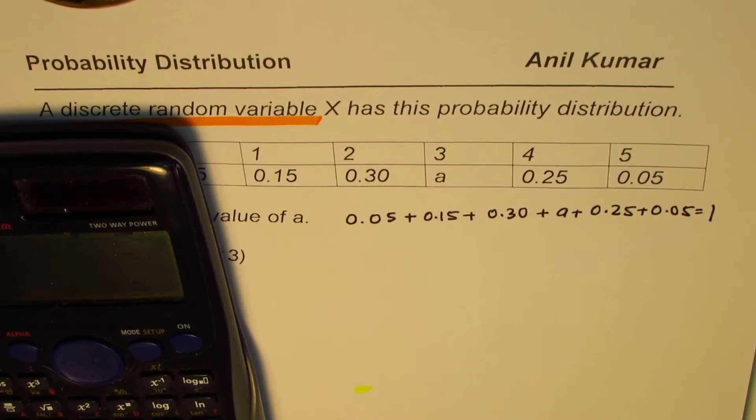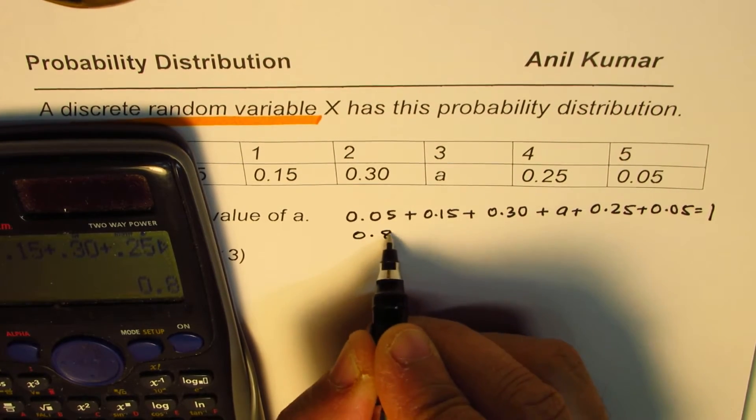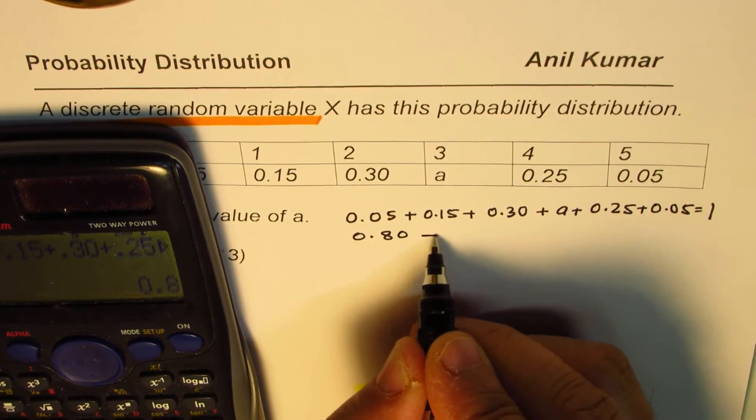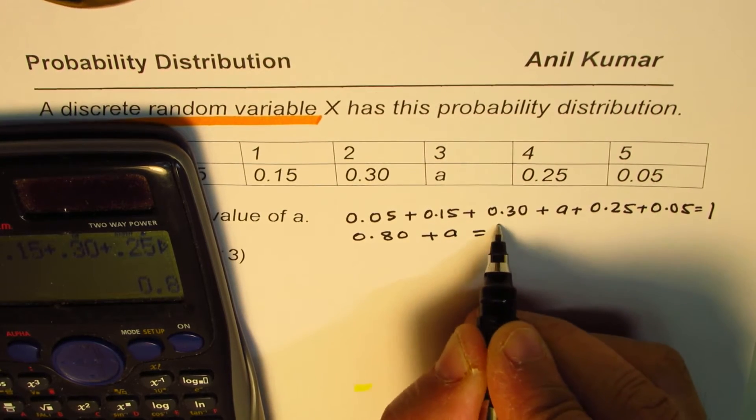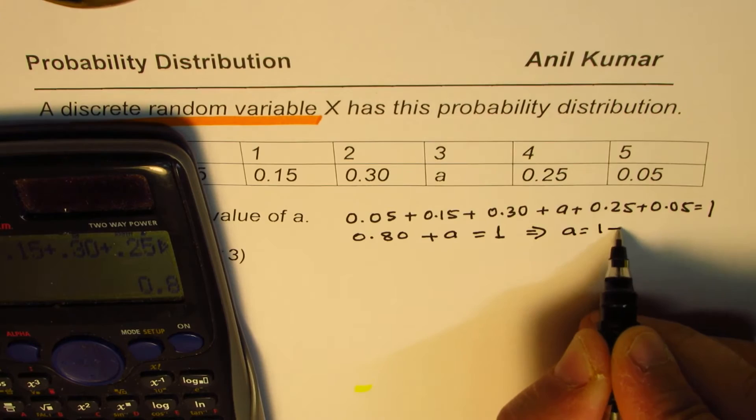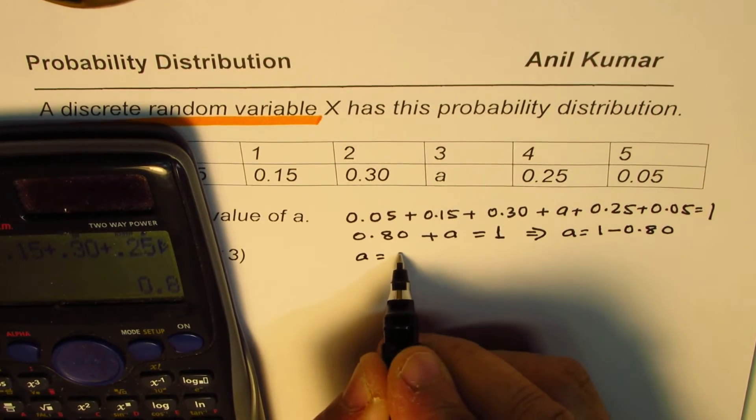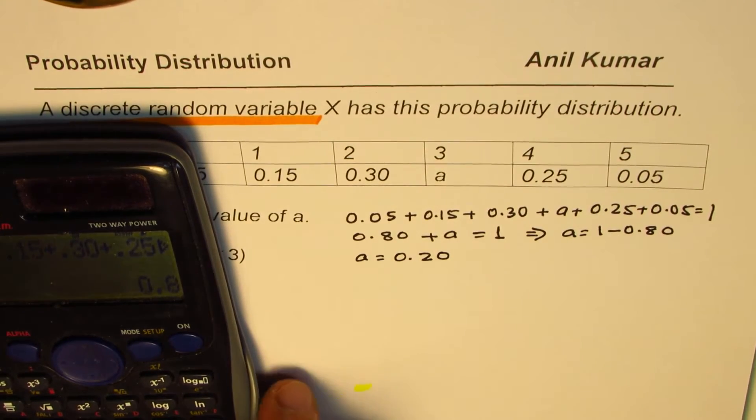So 0.05 plus 0.15 plus 0.30 plus 0.25 plus 0.05 is equal to 0.8. So we get 0.80 plus A equals to 1 and that gives me the value of A as 1 minus 0.80 or A is equal to 0.20.